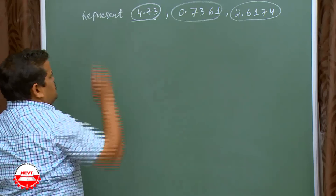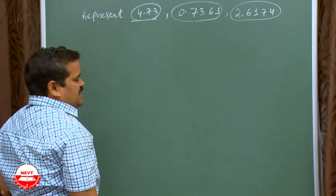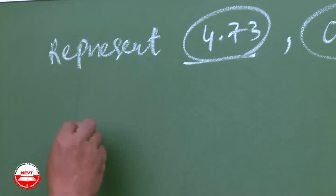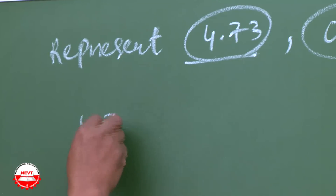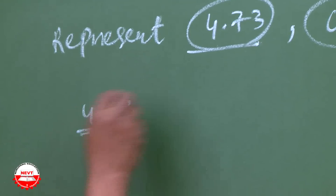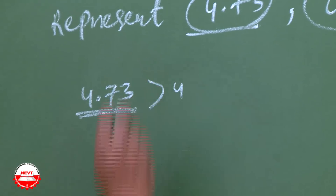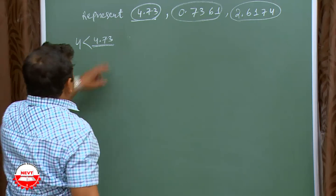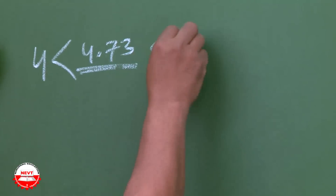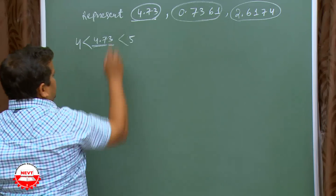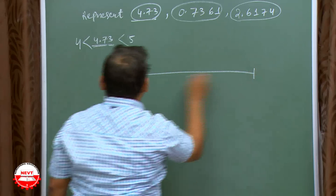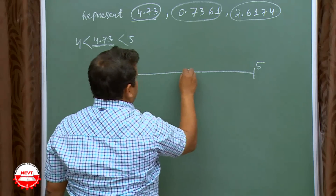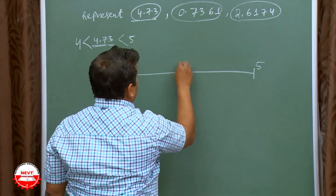First one is 4.73. We need to magnify it. 4.73 means the number is actually 4.73 — it is greater than 4 but less than 5. In a number line, let us say this is 4 and this is 5, with the middle part being 4.5.